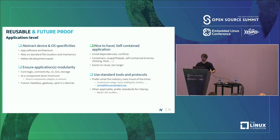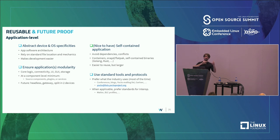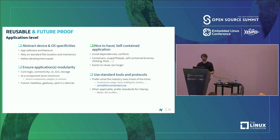For the application level, abstract your device and OS specificities. Make sure your application is modular — maybe in the future you'll have no display. Making it modular at the source, component, plugin, or service level will make it much easier to just swap a block. If that makes sense, use self-contained application services so you don't need to deal with dependencies and conflicts, and to avoid adding those same things in Yocto.